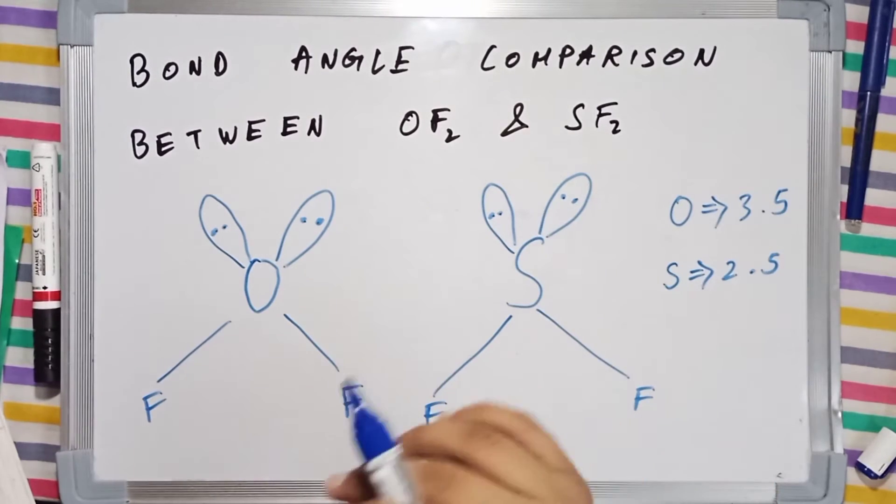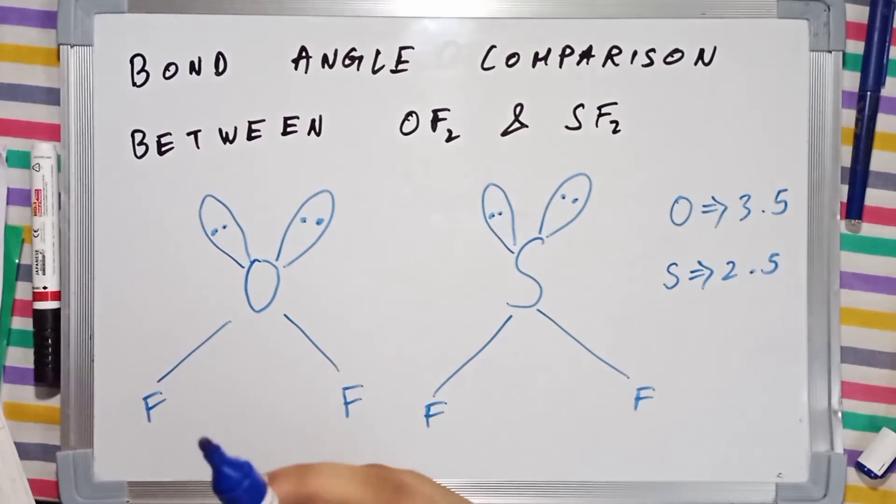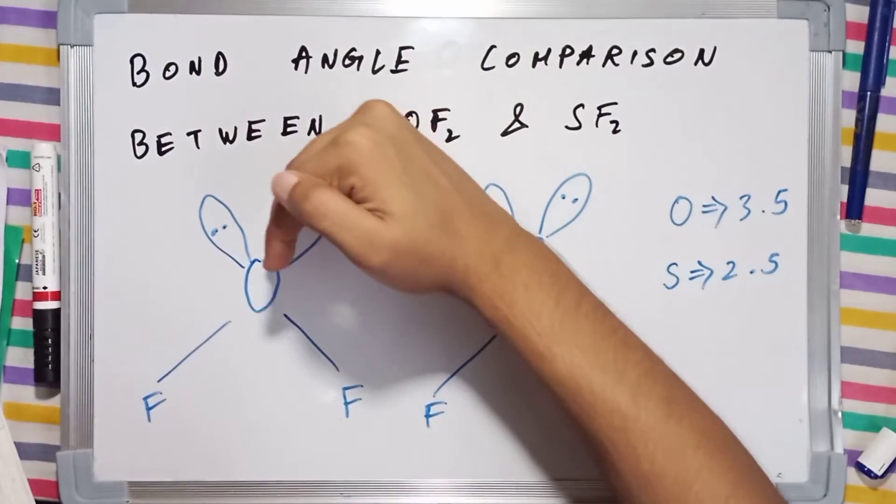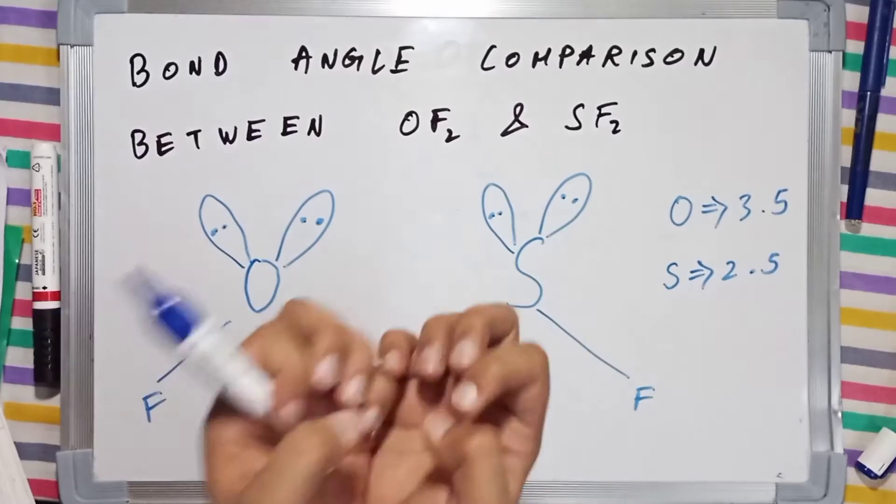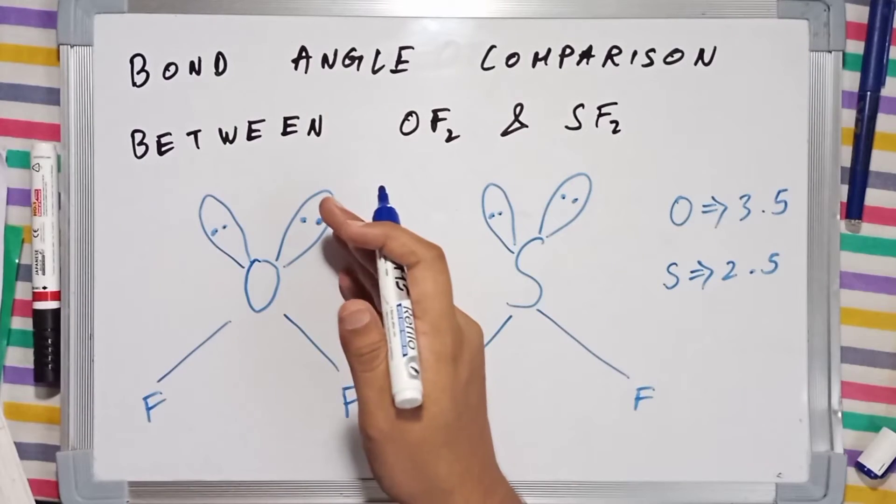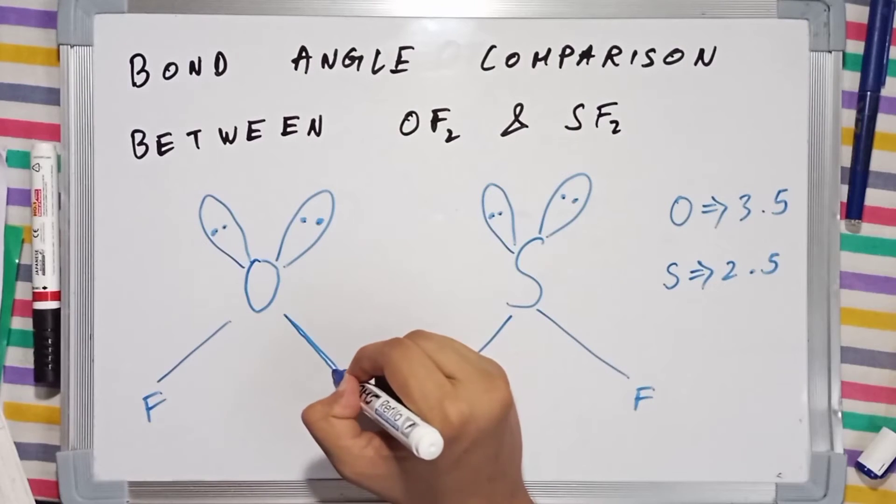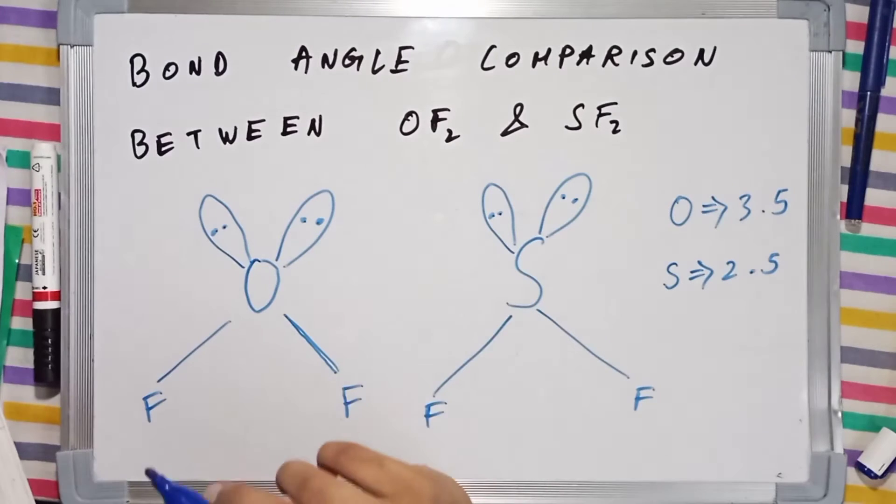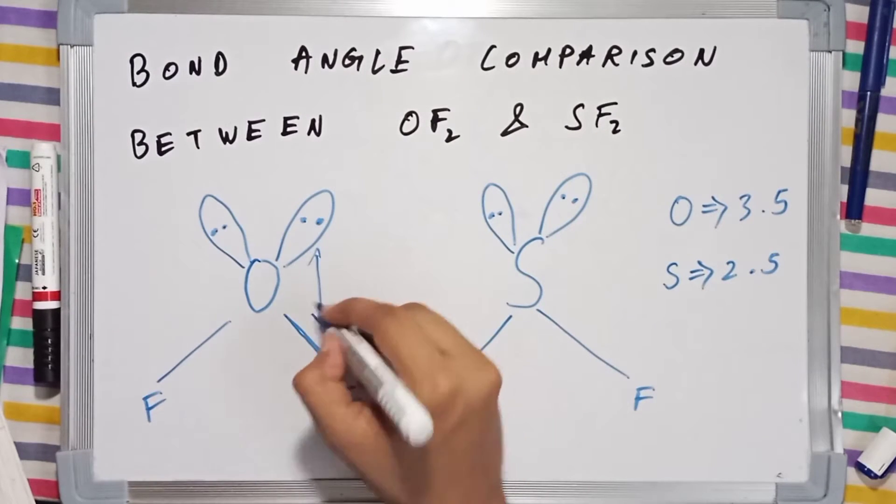As a result, these lone pairs won't have much distortion—they won't be able to move around because oxygen is grabbing them very aggressively. So there will be less repulsion between this bond and this lone pair. They will have greater separation because oxygen is holding them towards itself.